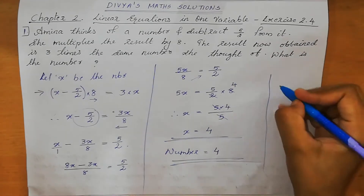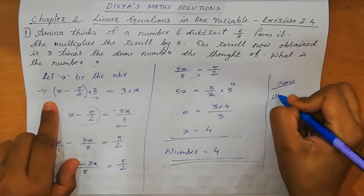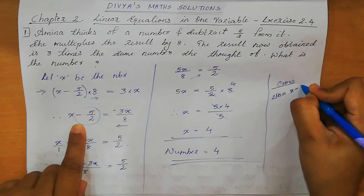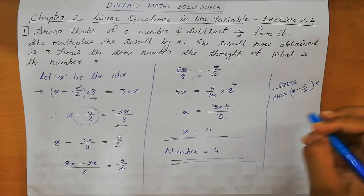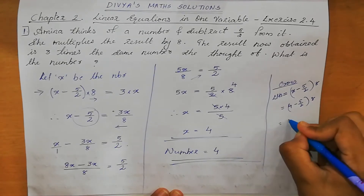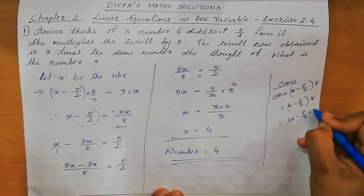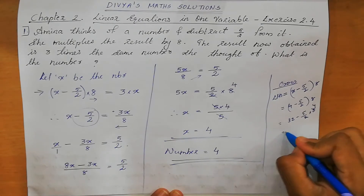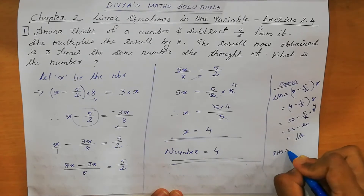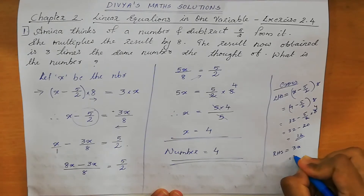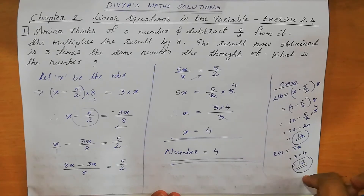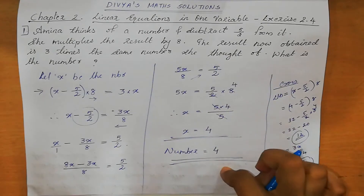We can cross-check. LHS is X minus 5 by 2 into 8. X value is 4: 4 minus 5 by 2 into 8. 8 fours are 32 minus 5 by 2 into 8 — this becomes 4, so 32 minus 20 equals 12. RHS equal to 3X, that means 3 into 4 equal to 12. LHS equal to RHS, so our answer is correct. The number she thought of is 4.